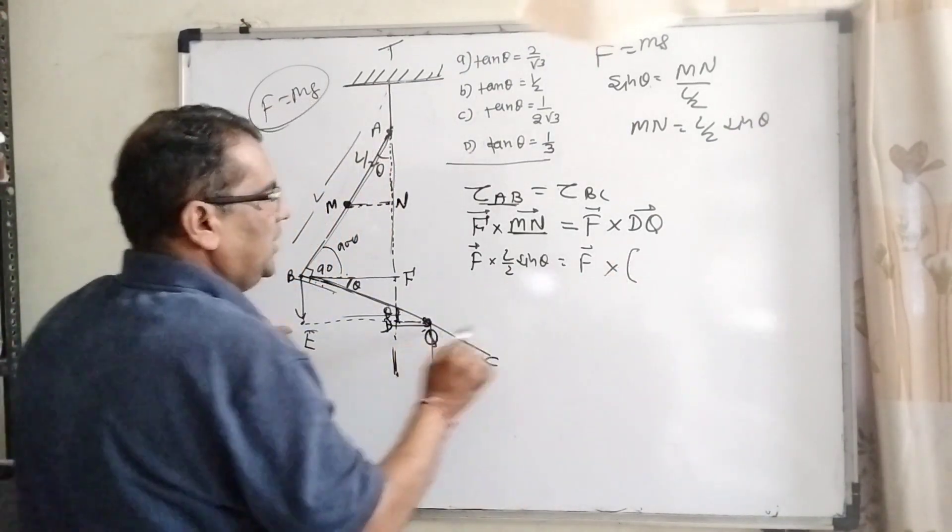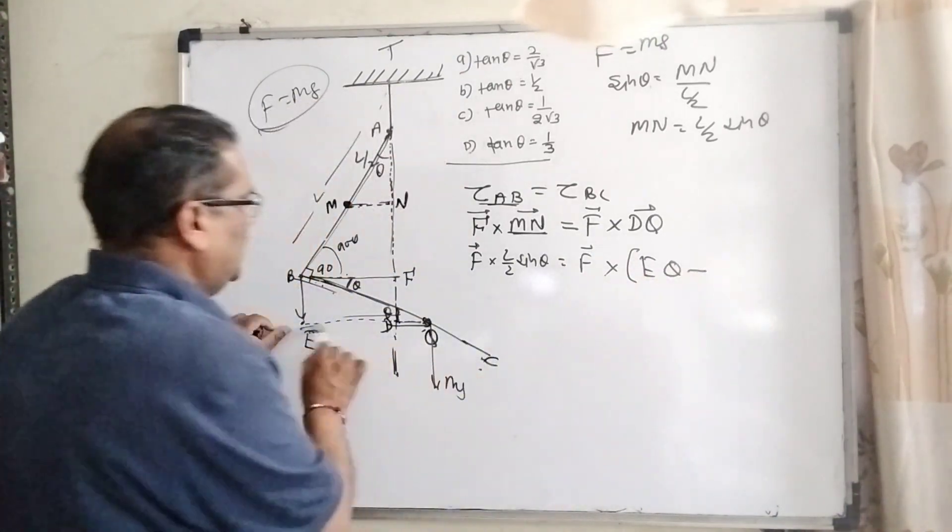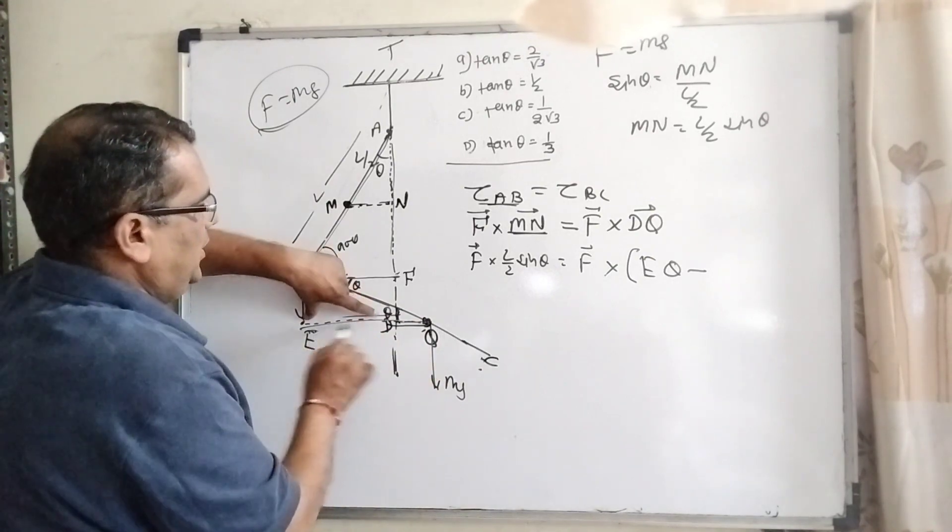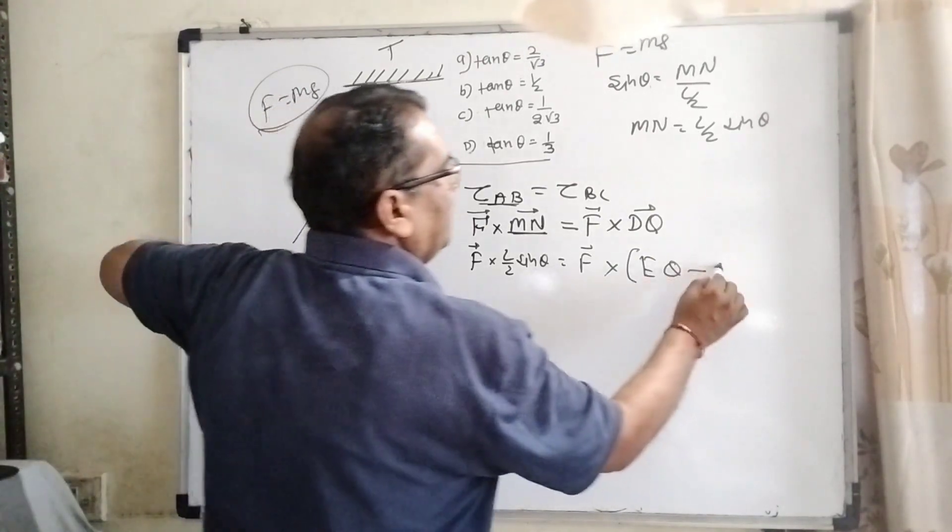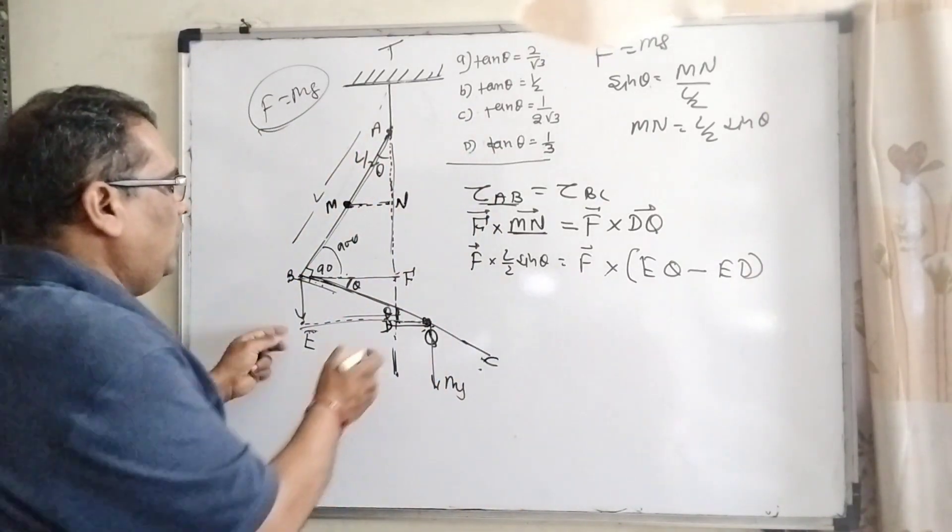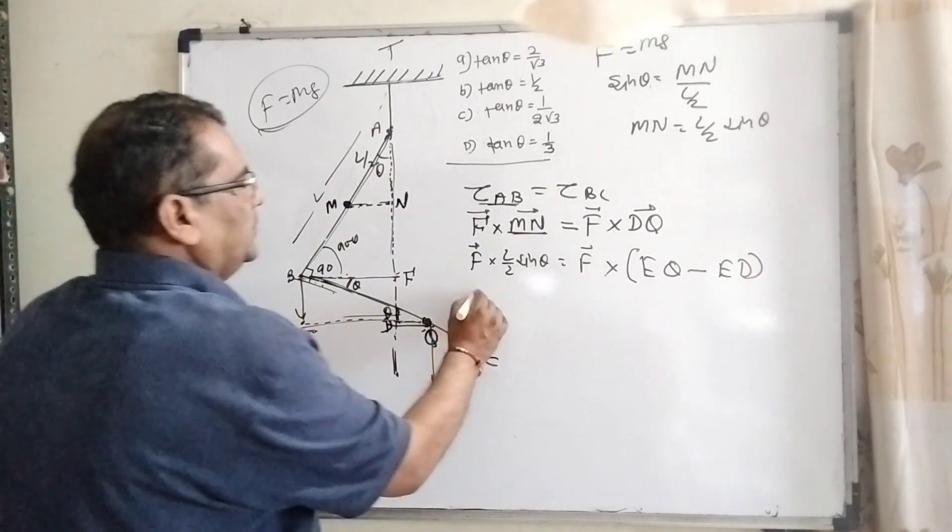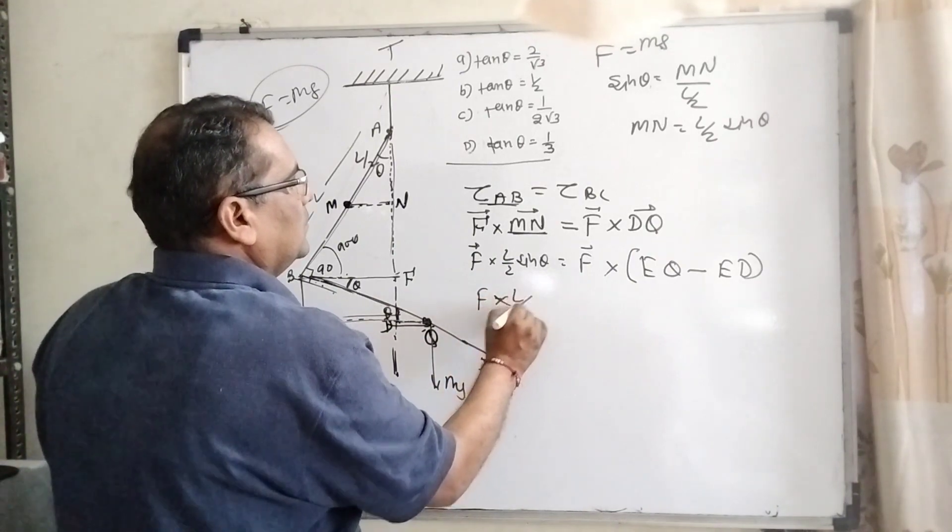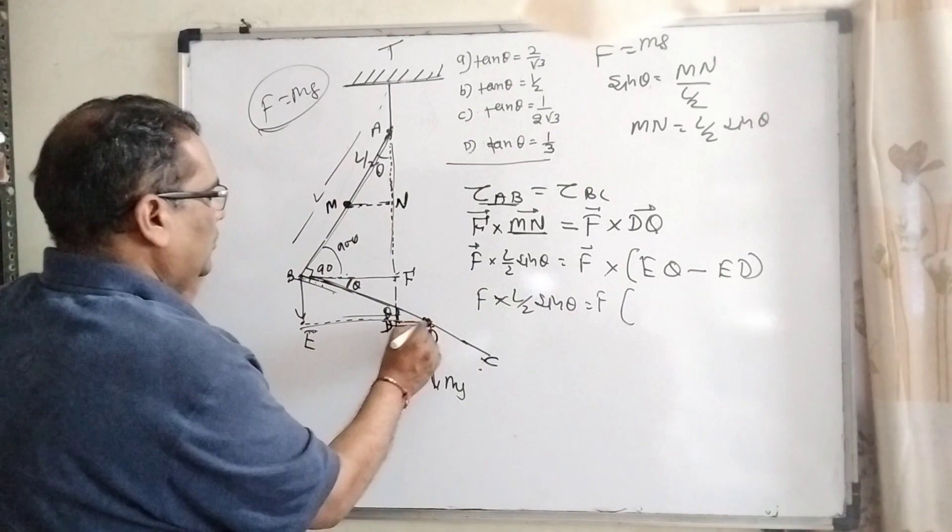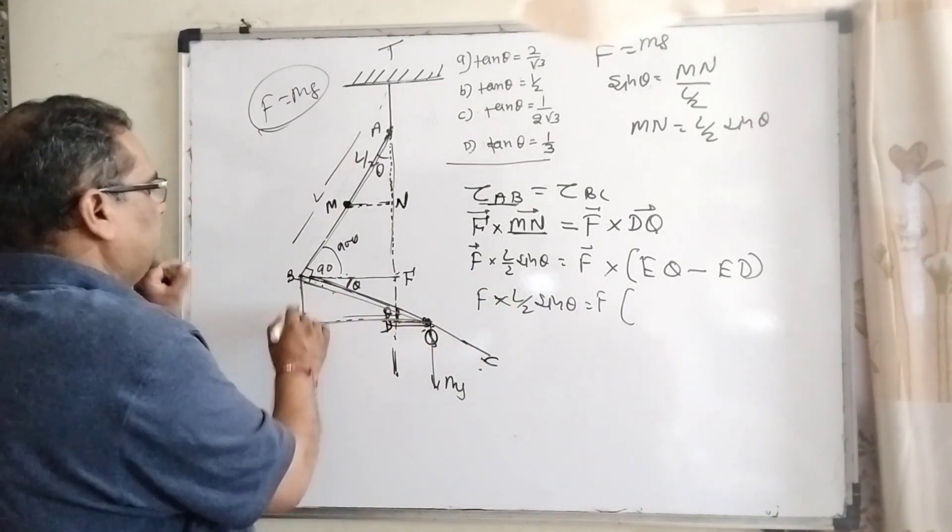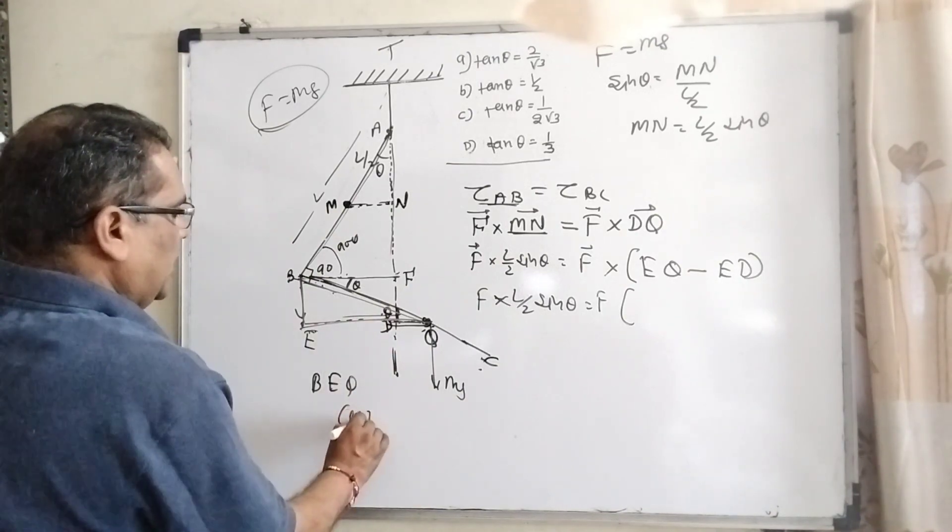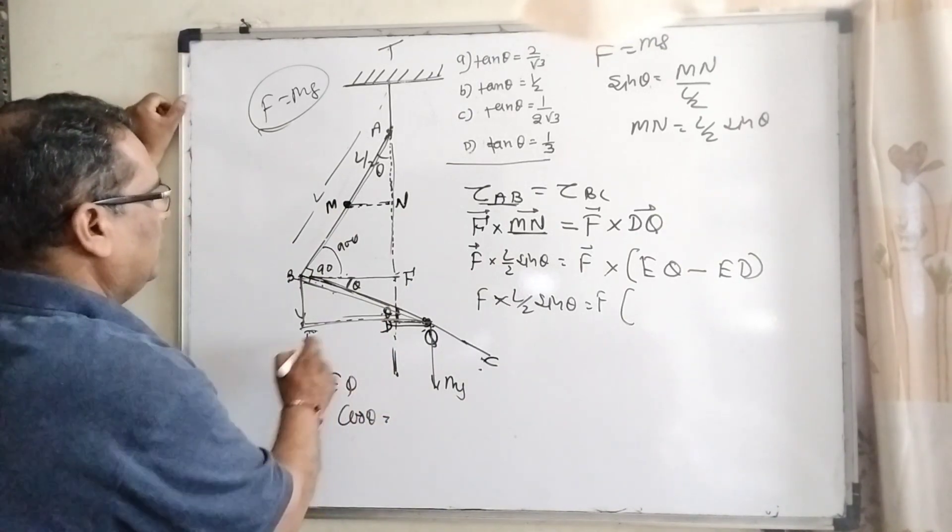So how you can find out DQ? Total distance DQ equal to total distance EQ minus EQ minus ED.